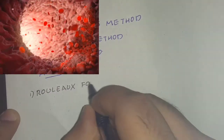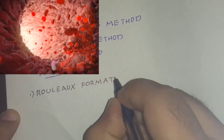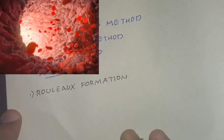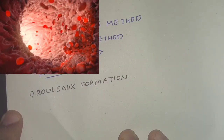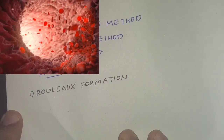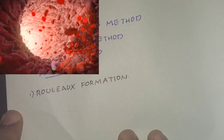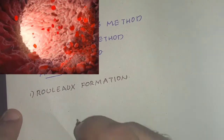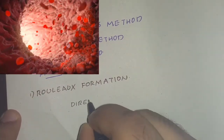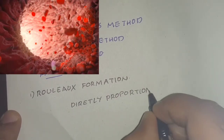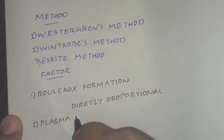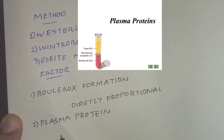Regarding the factors for ESR: the red cells align themselves side by side forming a stack called rouleux. The protein coating of the red cell plays a major role in rouleux formation — so more rouleux formed means higher ESR, making it directly proportional to ESR.